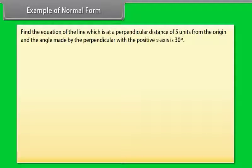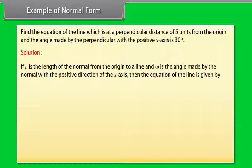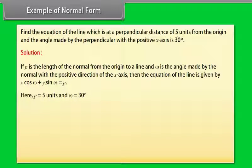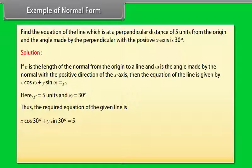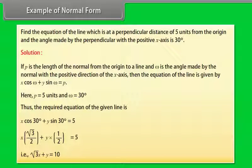Example of normal form: Find the equation of the line which is at a perpendicular distance of 5 units from the origin and the angle made by the perpendicular with the positive x-axis is 30 degrees. Solution: If p is the length of the normal from the origin and ω is the angle made with the positive x-axis, the equation is x cos ω + y sin ω = p. Here p = 5 and ω = 30°. Thus the required equation is x cos 30° + y sin 30° = 5, which simplifies to x√3 + y = 10.